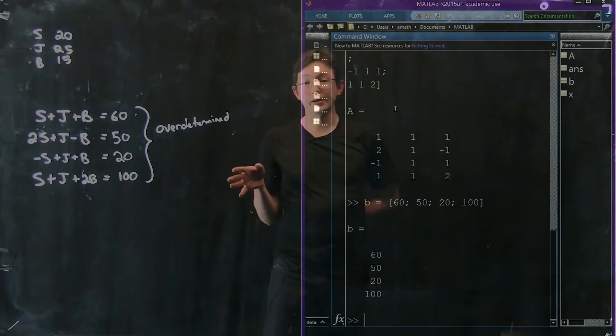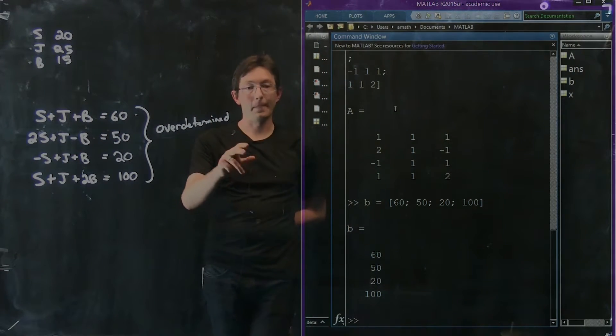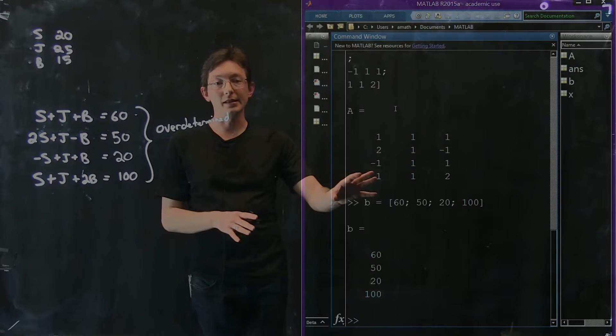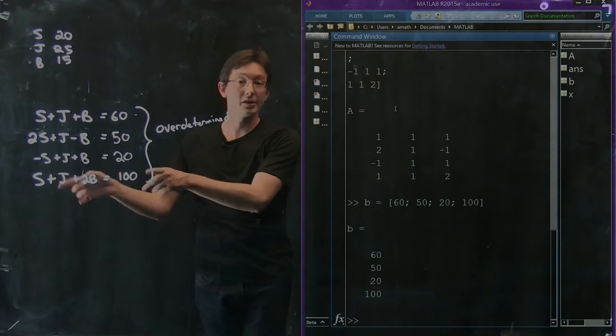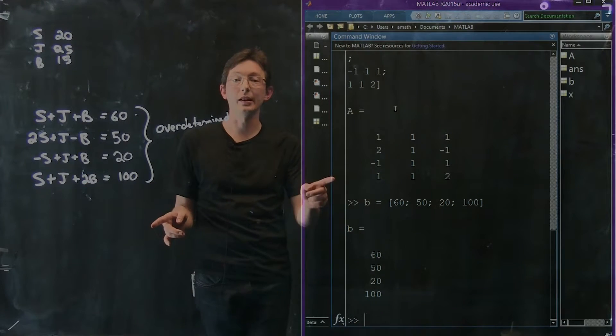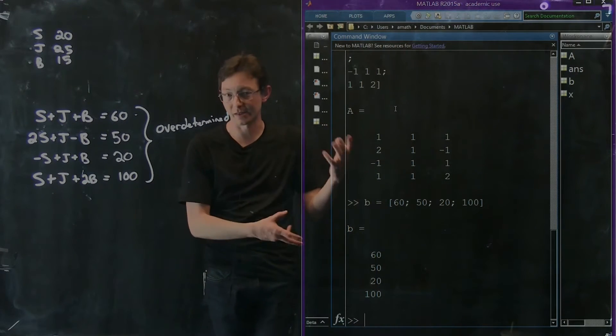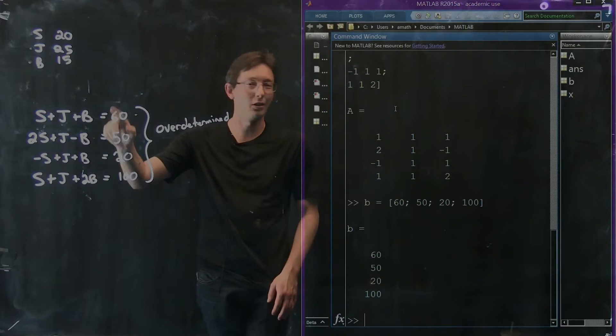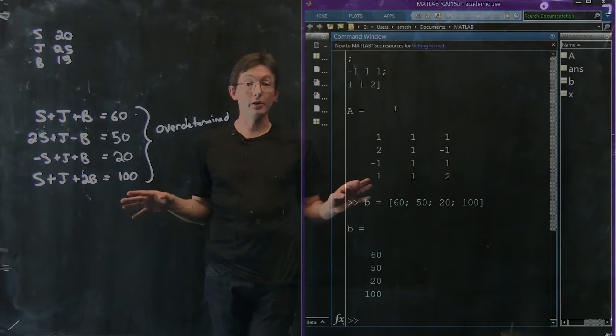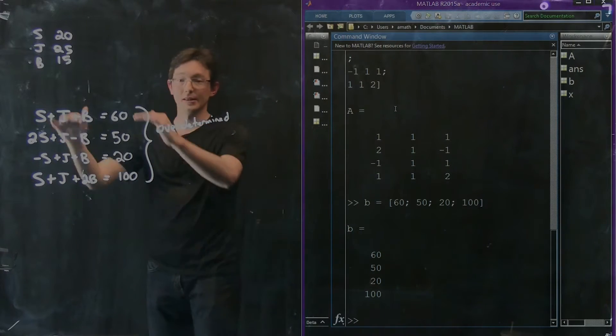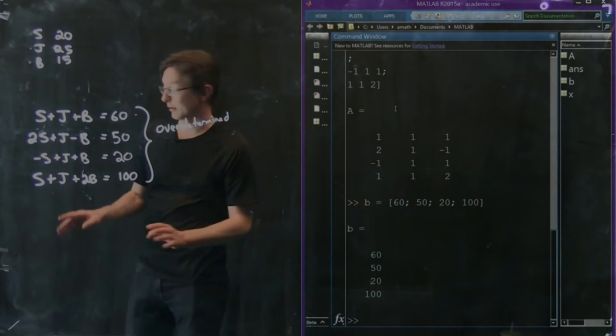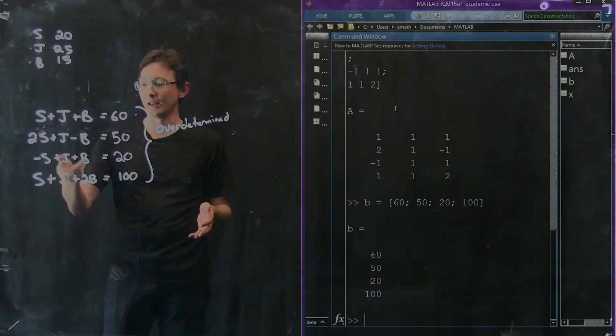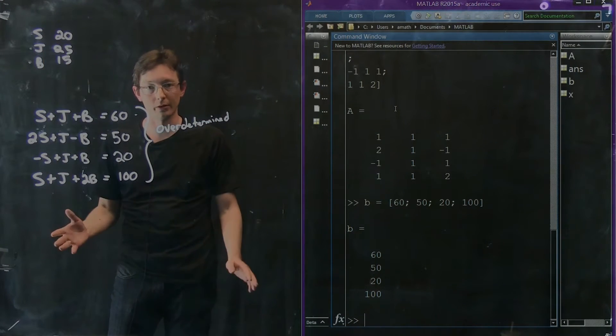And again, I can try these different solutions. I can do A backslash B. I could do pseudo-inverse of A times B. But none of these outputs of MATLAB are actually going to solve this system. MATLAB is going to give me what it thinks is the closest solution, the closest values of Sally, John, and Bob that get close to solving this. But there are no values that exactly solve this equation. This is overdetermined. I boxed myself out of a solution. And this is a real risk in equations. You can have too many constraints and you won't be able to satisfy them all.